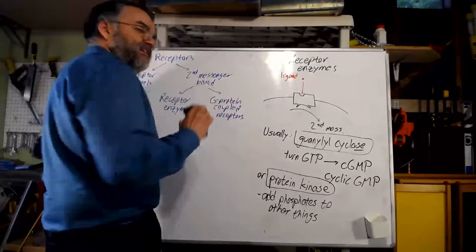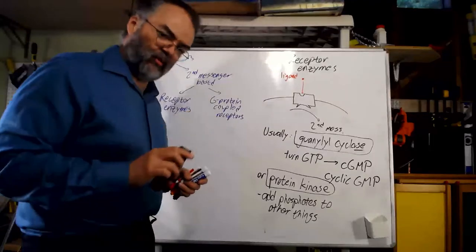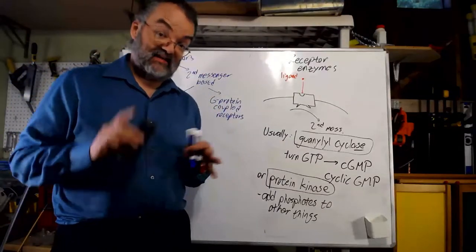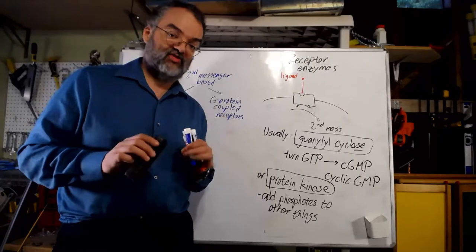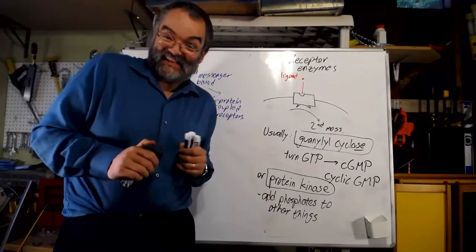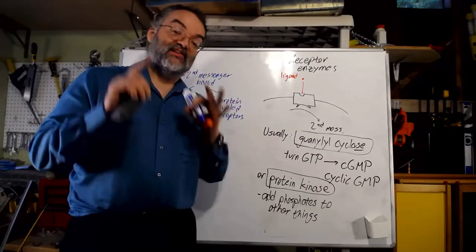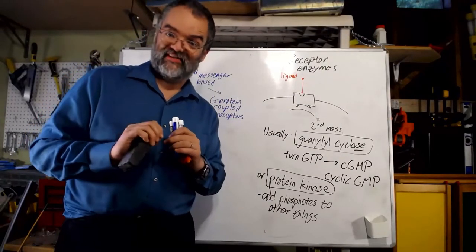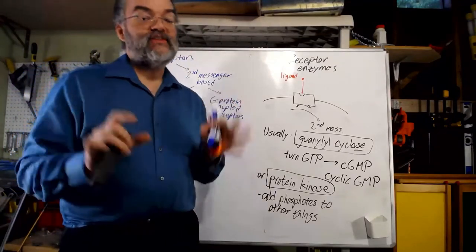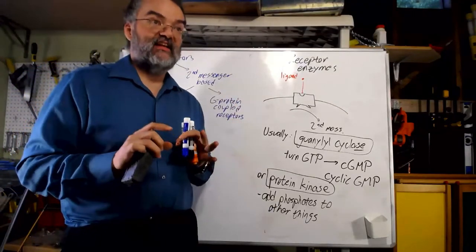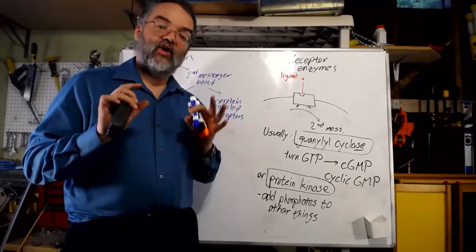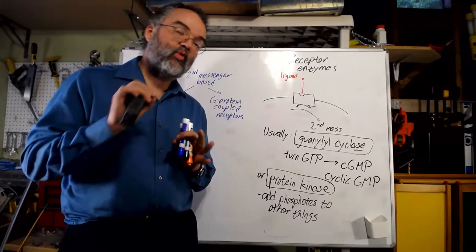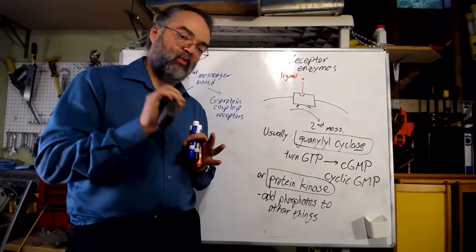The other kind of second-messenger receptor is a little more complicated — and in this class, when I say a little more complicated, your response should be 'goody,' because a little more complicated usually means more interesting. Physiology is not simple; there's always complexity, always something more subtle. You'll never learn all of it — I certainly don't know all of it, I don't know even a tiny fraction of it. But that's a good thing — it means there's always something more interesting just below the surface of what you're learning.